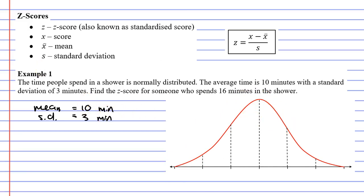The mean is 10 minutes, so that goes right in the middle of the bell curve. The mean has a z-score of 0. Our standard deviation is 3 minutes, so as we move to the right we add 3 each time: 13 minutes, 16 minutes, and 19 minutes.